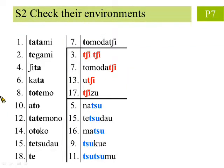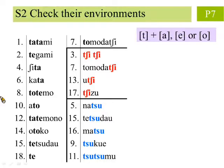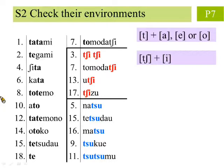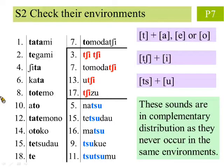In Step 2, we check their sound environments. After checking, we see that the sound [t] may be followed by the vowels [a], [a], or [o]. Since these sounds never occur in the same environments, they are clearly in complementary distribution.